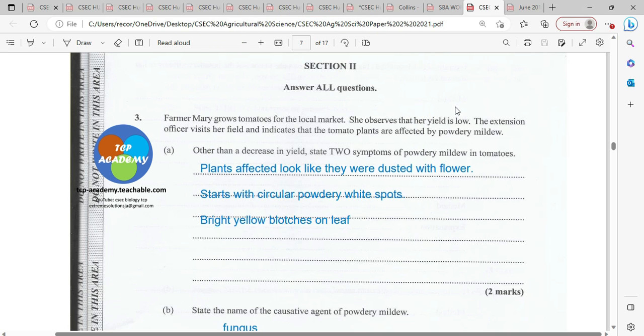But here we give you three. Plants affected look like they were dusted with flour or something white. It usually starts with circular white powdery spots. And there is usually, in some cases, bright yellow blotches on the leaves.